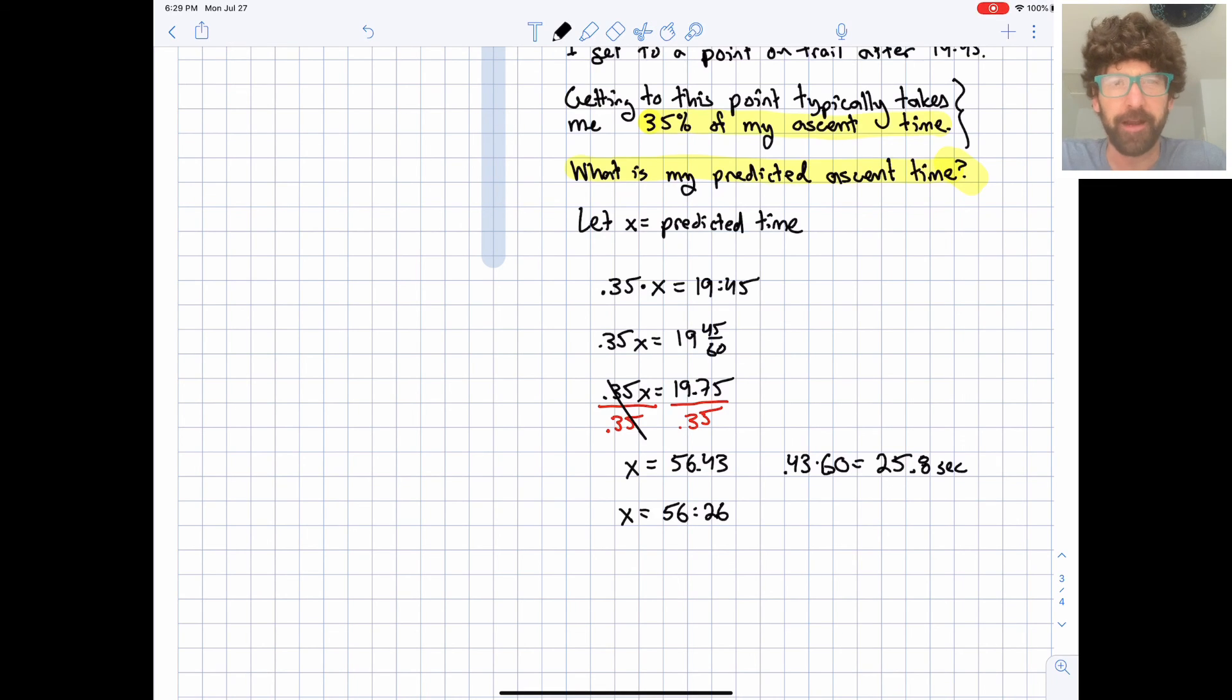So my final answer here is going to be 56 minutes and about 26 seconds. And I forget what, on that actual day I was tracking here, I forget what my actual exact ascent time was, but I bet it was within a minute or two of what we just calculated. So there's my solution right there, and that's a good place to stop.